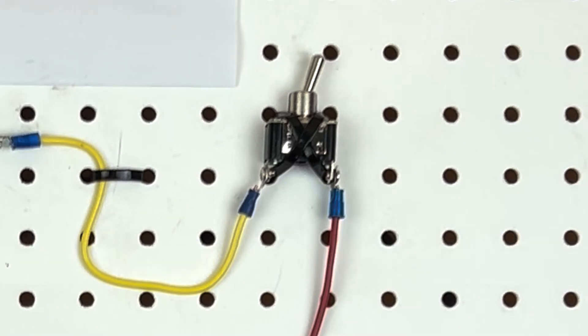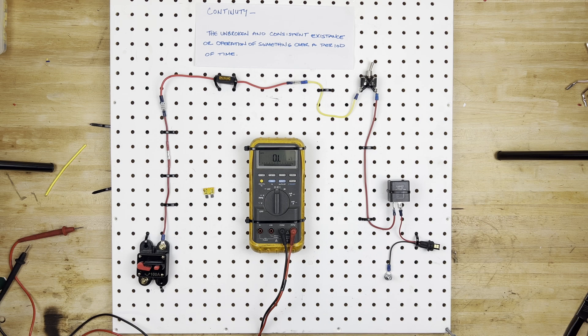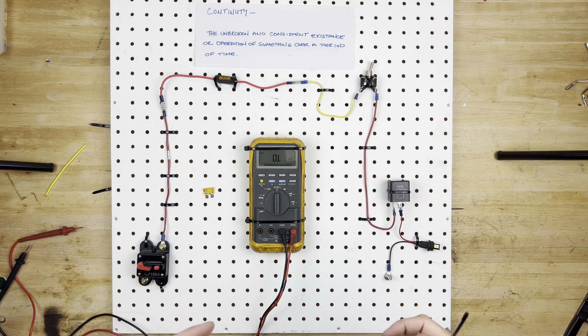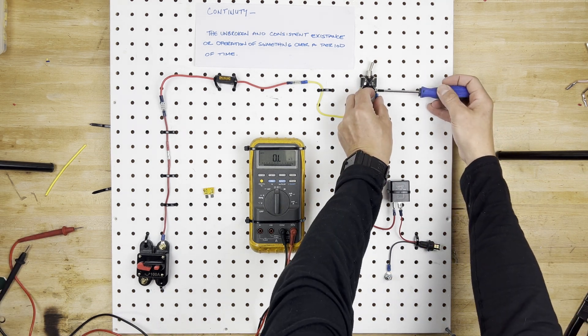Loose terminals actually happen way more often than you think, especially in the racing world and off-roading, anything that really takes a lot of abuse and has been through a lot. You'll often find loose connections. Luckily they're pretty easy to fix.